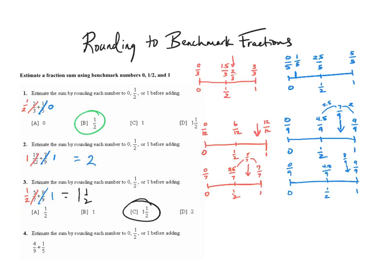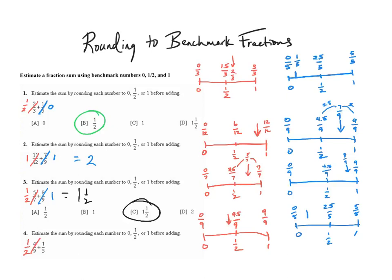My last problem is 4 ninths plus 1 fifth. For 4 ninths: 0, 1 half, 1 whole — so 0 ninths, 9 ninths, and 4.5 ninths. 4 ninths is just slightly less than 4.5 ninths, so it's very close to 1 half, and that's what I'm going to round it to. For 1 fifth: 0, 1 half, and 5 fifths, with half of 5 being 2.5. 1 fifth is probably right around there — it is 1 away from 0 and 1 and 1 half away from 2.5, so it is closer to 0. A half plus 0 equals 1 half.